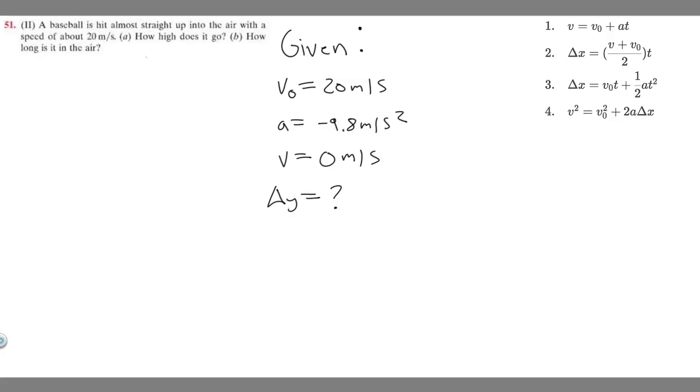So v² which is just zero, so 0² is zero. So 0 equals v₀², which is 20, so 20² I'm just going to write as 400. So 400 plus 2 times a, which is minus 9.8, times Δx in this case, but ours is Δy because it's changing on the y-axis.